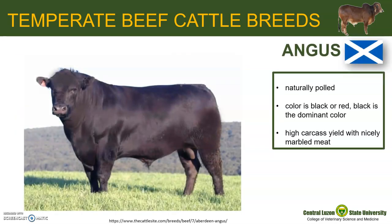The Aberdeen Angus breed, internationally known as Angus, was developed from the polled and predominantly black cattle of Scotland. They are naturally polled and can be black or red in color, although black is the dominant color. White may occasionally appear on the udder. Angus are renowned as a carcass breed because they have a high carcass yield with nicely marbled meat. That ends our short discussion about the temperate and tropical breeds of beef cattle. You may now proceed to part 2 of this lecture on stabilized breeds resulting from years of crossbreeding of the different beef cattle breeds.